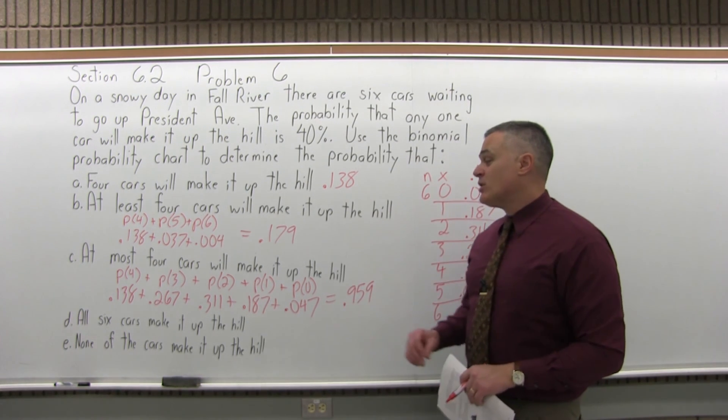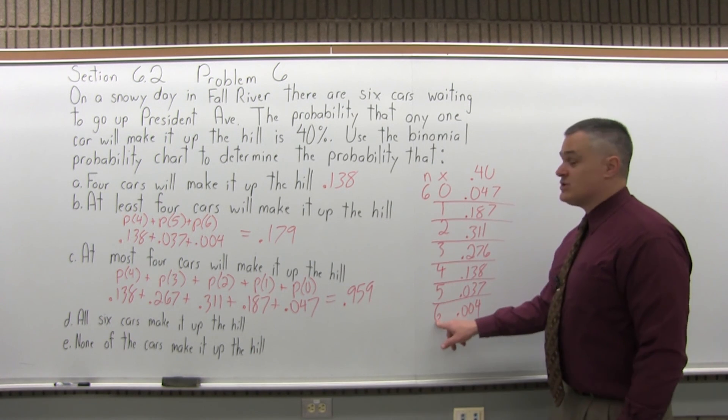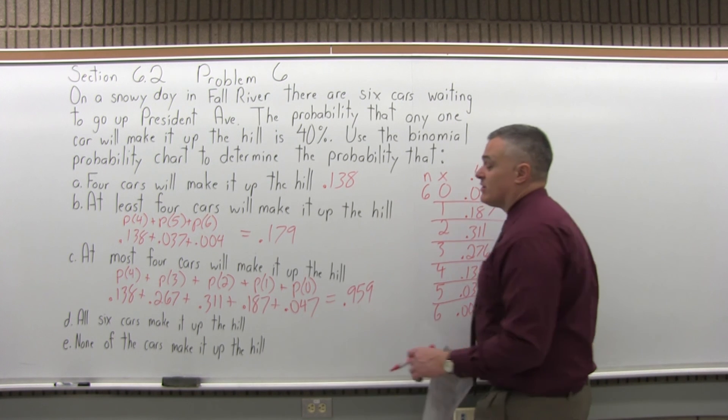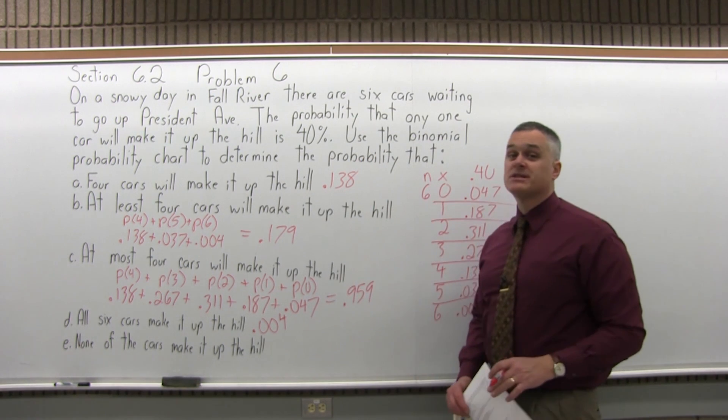D, what's the probability that all six cars make it up the hill? For all six, what you have to do is just look next to the six. Next to the six is .004. That's a little bit less than a half a percent probability that all six make it up the hill.